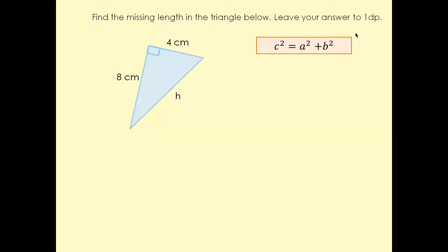This is the formula we need to remember. If this side is C, this side is A, and this side is B — hypotenuse squared, which is the longest side, is going to be equal to the square of one side plus the square of the other side. So if you have to find the longest side, the hypotenuse, in a right-angled triangle, that's the formula we're going to use always. The square of the hypotenuse equals the sum of the squares of the other two sides.